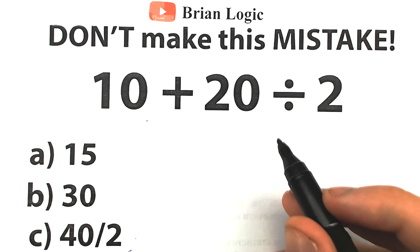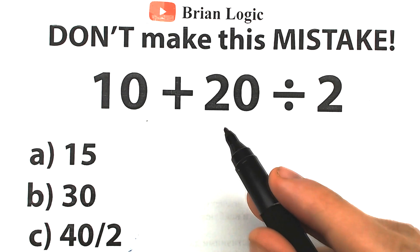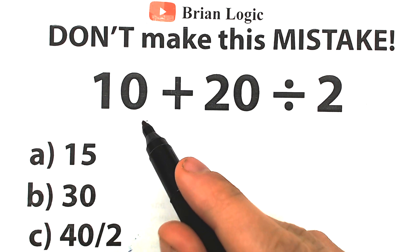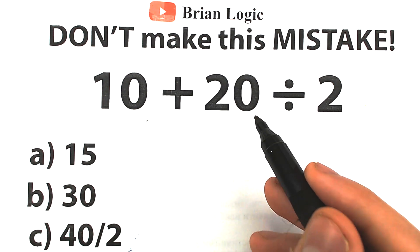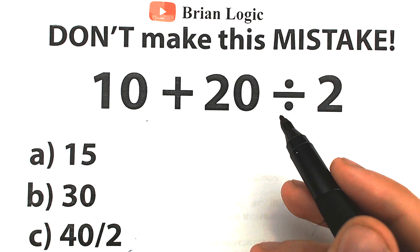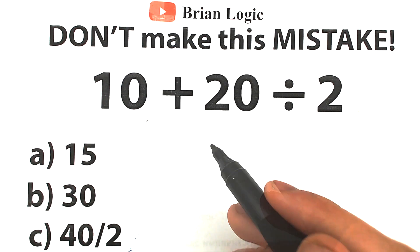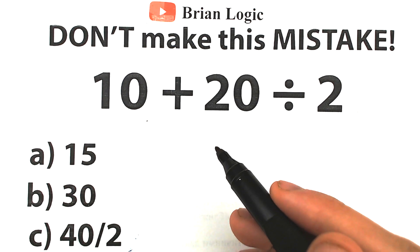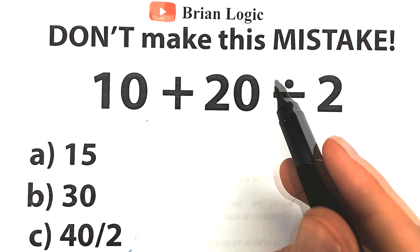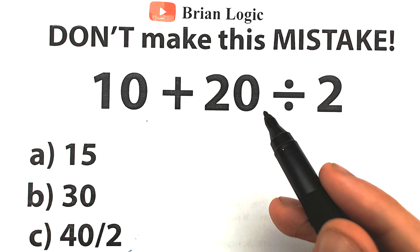Welcome back to my channel BrainLogic. Let's figure out this super simple math problem right here. What we have is 10 plus 20 divided by 2. Seems pretty basic, seems pretty easy — we have very simple addition, very simple division. Everyone learns this stuff in the 3rd grade. We don't have huge values; we have 10, 20, and 2 — all regular numbers.